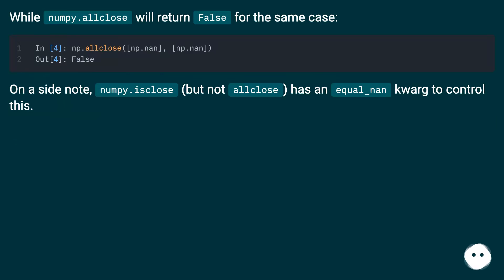On a side note, numpy.isclose, but not allclose, has an equal_nan parameter to control this.